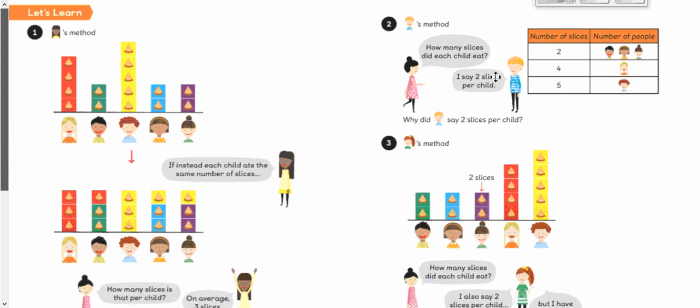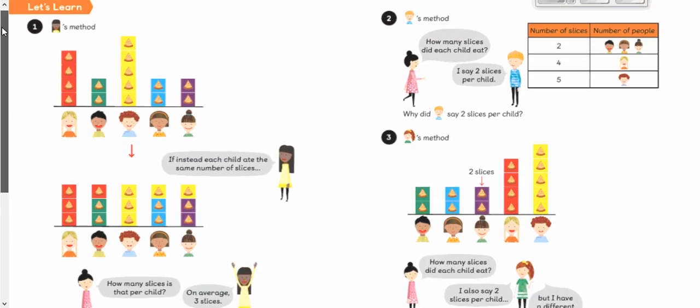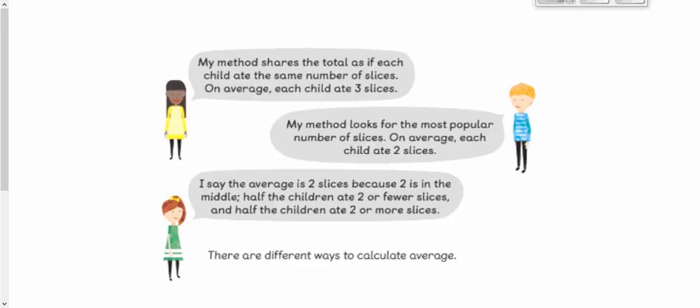This boy's method, how many slices did each child eat? He says two slices per child because the number of people who ate two slices is one, two, three. The number of people who ate four slices is one person. And the number of people who ate five slices is one person. So have a think. Why might he have said that it's two slices per child? And this girl's method, she's put them in a chart again. And she said that this one was an arrow pointing saying two slices. And she says two slices per child. But she's used a different method to that boy. So why could she be saying it's two slices?